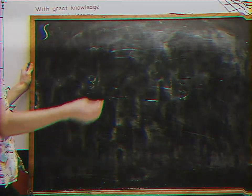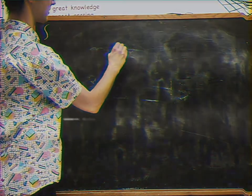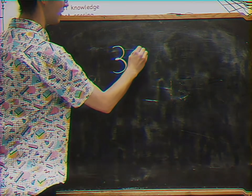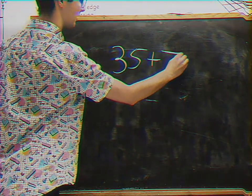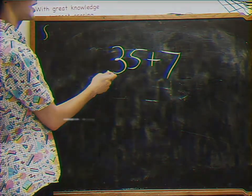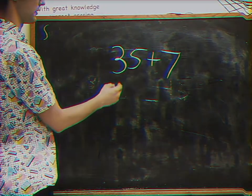So now the cool part is we could do this with larger problems. So let's say we've got something like 35 plus 7. With this one, we're not going to make 10, but what we're going to make is the next 10 above 35.